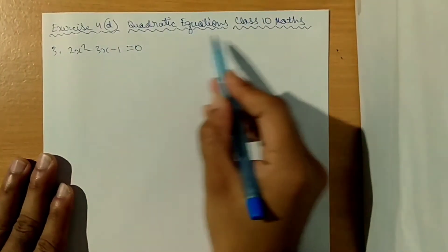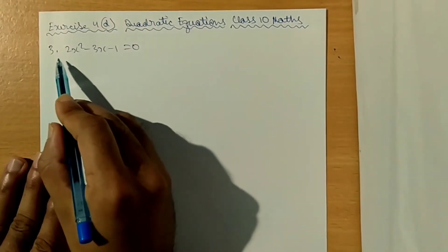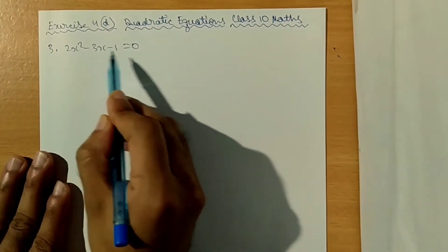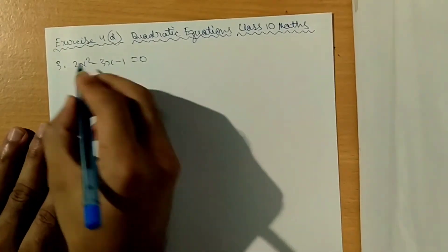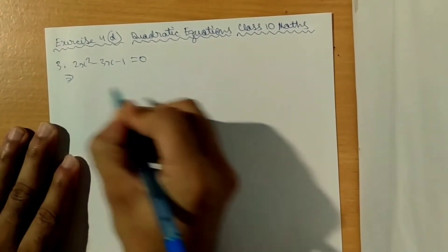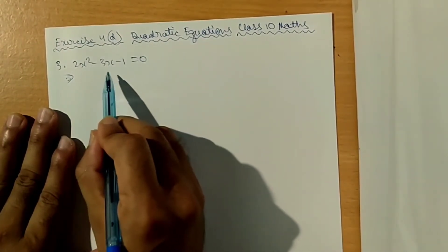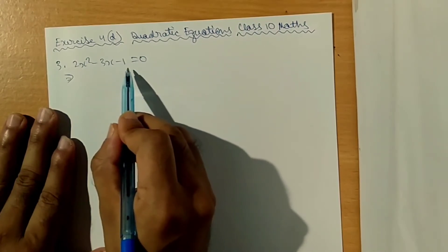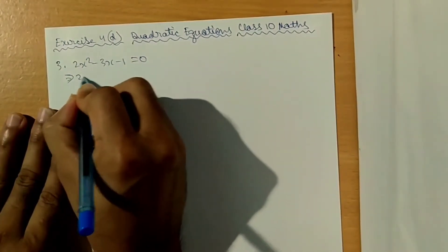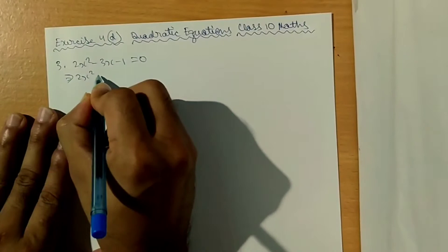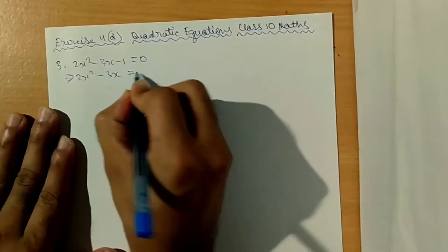Quadratic equations, Class 10 maths, question number 3: 2x squared minus 3x minus 1 equal to 0. Now we will solve this by completing the square method. For the left side, 2x squared minus 3x.